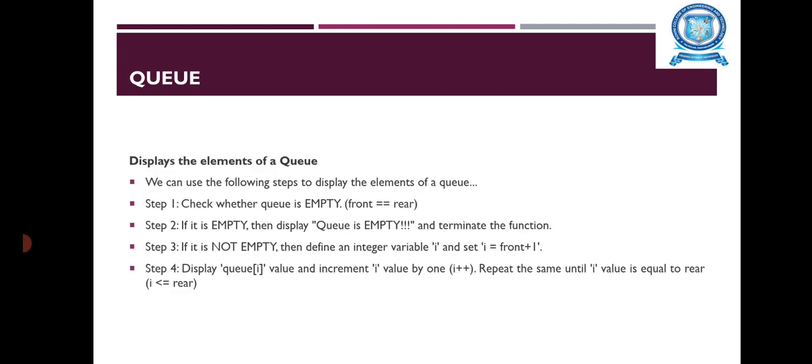The next function is used to display the elements of the queue. Steps: Step one — check whether the queue is empty. If it is empty, display 'Queue is empty.' If it is not empty, define an integer variable i and set i equal to front plus one. Then display the queue value and increment i by one. Repeat until i equals rear.